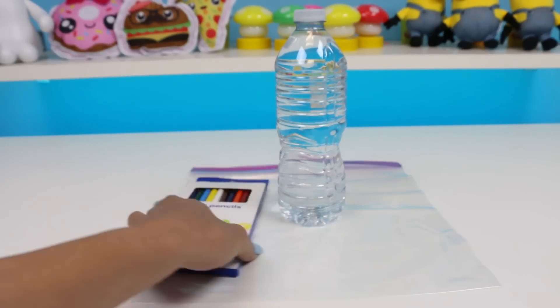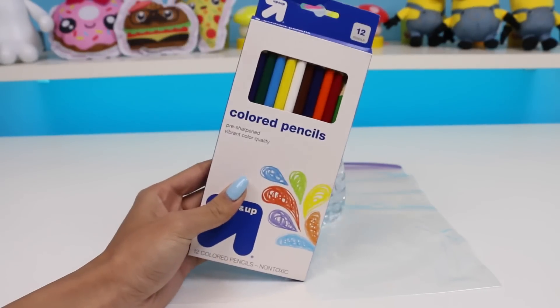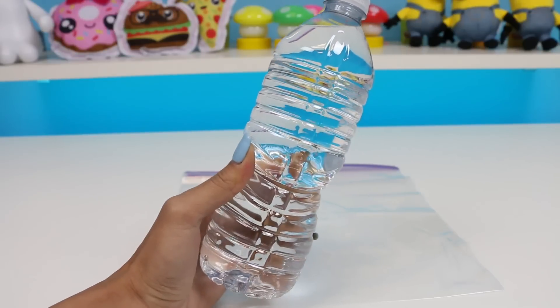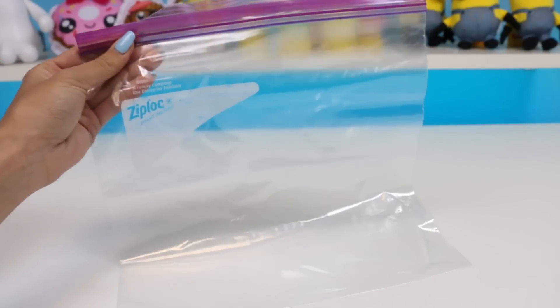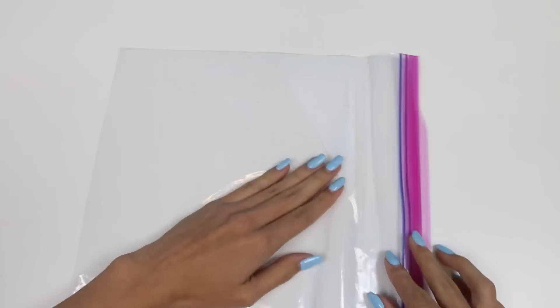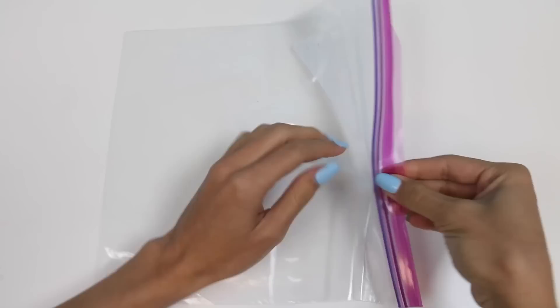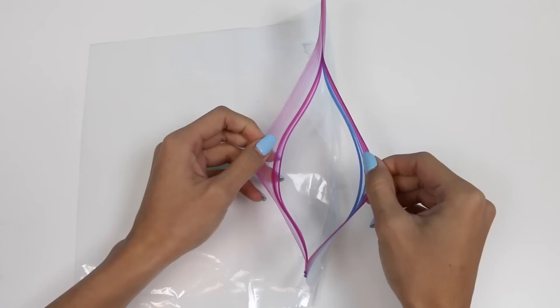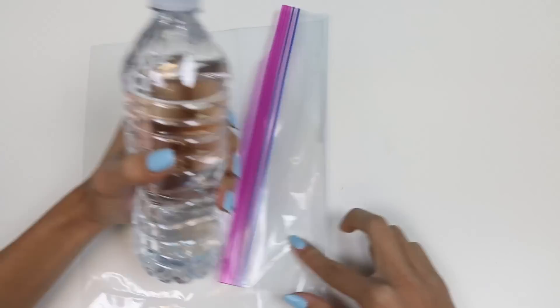We'll need color pencils, water, and a ziploc bag. Let's get started! The first thing we need to do is pour water into our ziploc bag. You can definitely just take the bag to the sink if you want to fill it up that way.